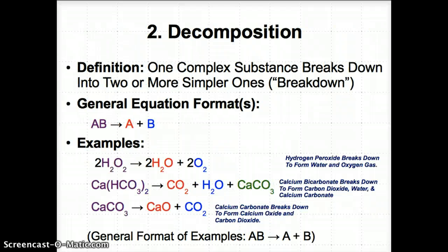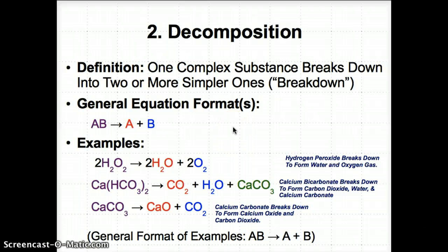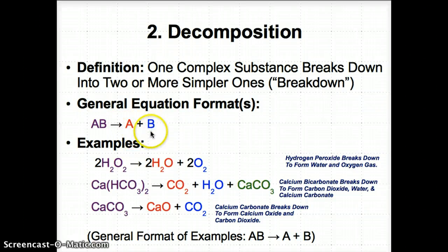Now let's talk about the second type of reaction: decomposition. This means one complex substance breaks down into two or more simpler substances. The key word here is 'breakdown.' Think of this as the opposite of direct combination — it's not becoming more complex; you're breaking down to become more simple. Generally, AB (a more complex substance) will break down to form A and B, which are simpler.